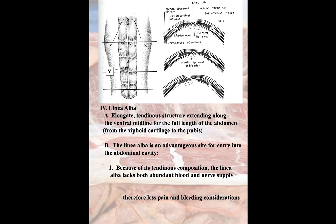What is the linea alba? The linea alba is an elongated tendinous structure that extends along the ventral midline for the full length of the abdomen, from the xiphoid cartilage toward the pubic bone. This is a tendinous structure whose matrix has the same characteristics as a tendon — dense regular connective tissue.